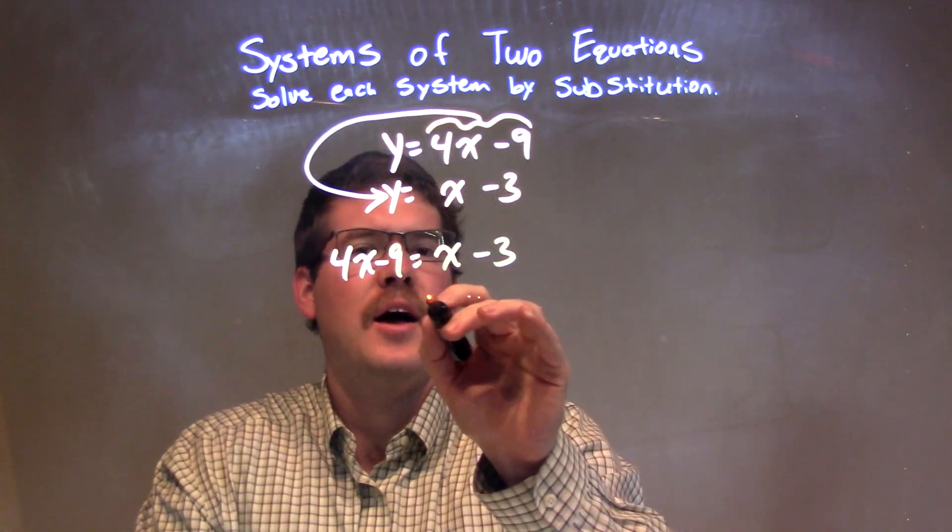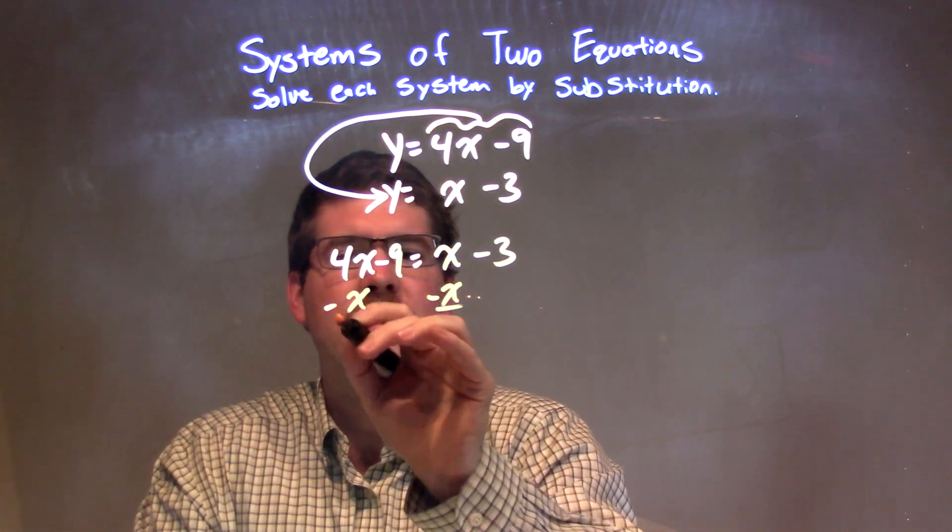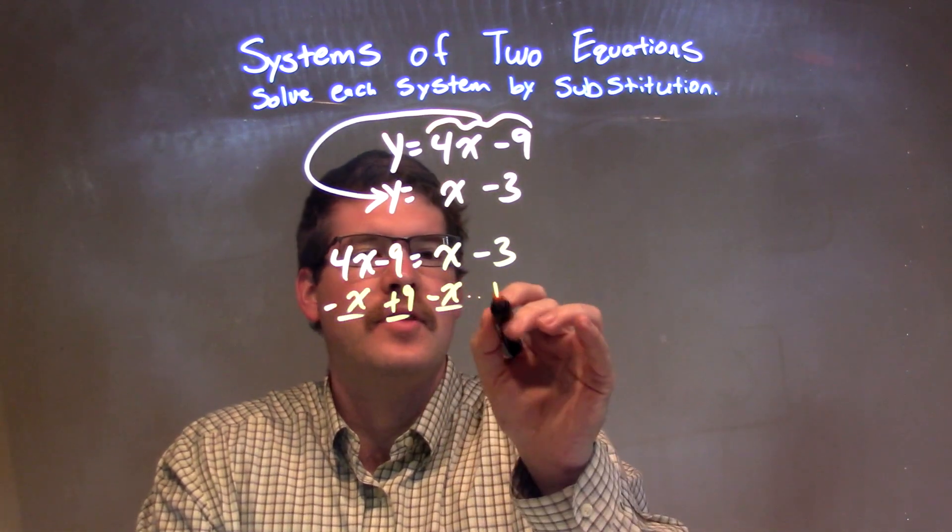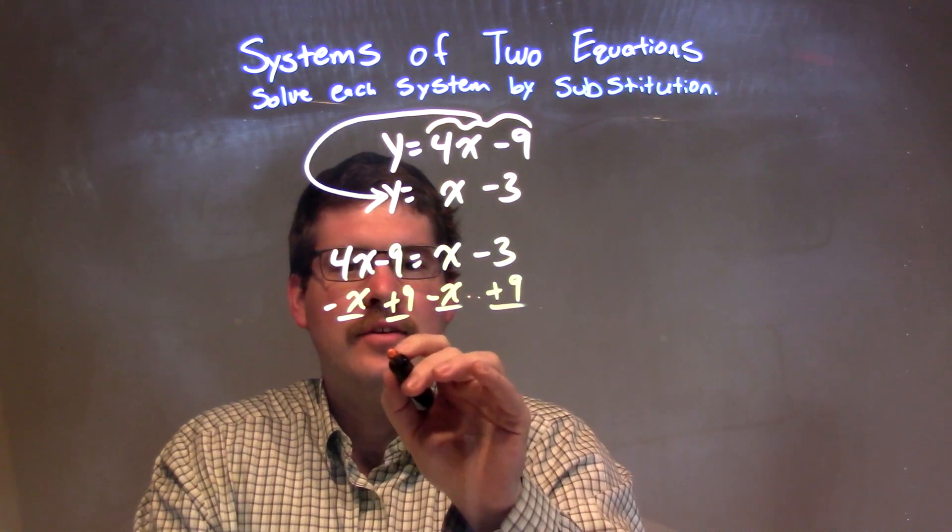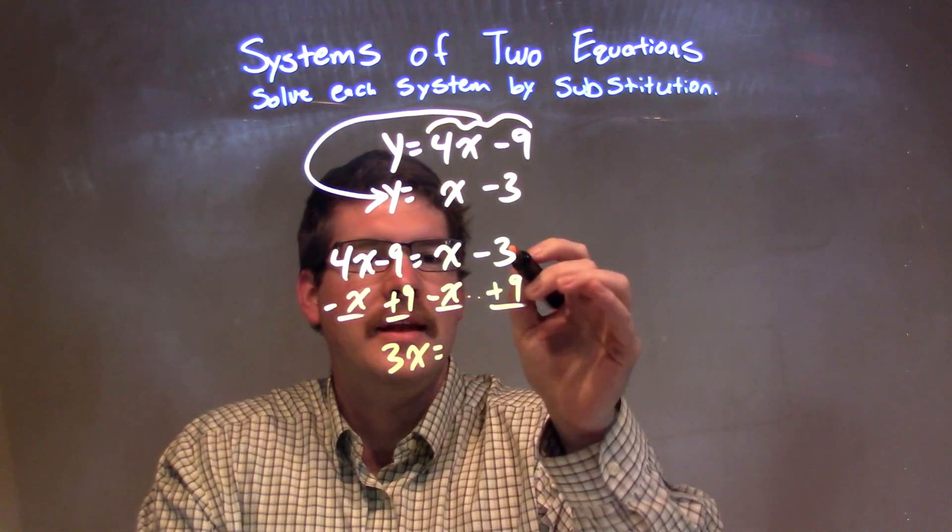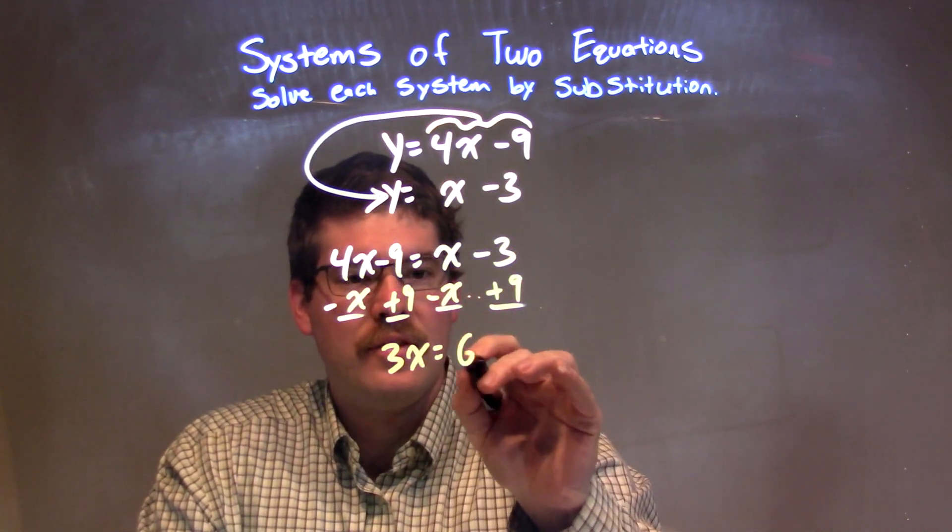Now I'm going to solve for x. I'm going to subtract an x from both sides. I'm going to add a 9 to both sides. 4x minus x is 3x, and negative 3 plus 9 is positive 6.